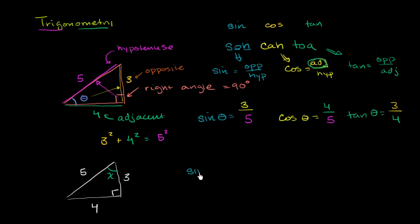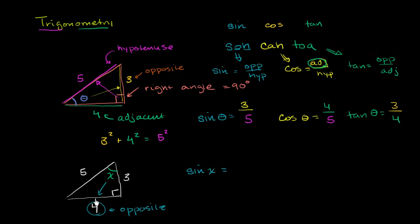Sine of x equals opposite over hypotenuse. What side is opposite to x? It opens onto the 4 side. Remember, 4 was adjacent to theta, but it's opposite to x. So sine of x equals 4 over the hypotenuse — the hypotenuse is always 5 regardless of which angle you pick — so sine of x is 4 fifths.